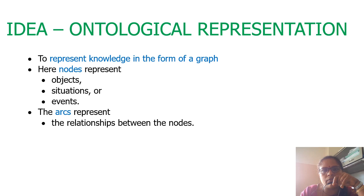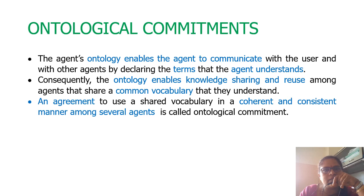Once we say graphs, it consists of nodes and arcs. Nodes represent objects, situations, or events, and arcs represent the relationships between the nodes.